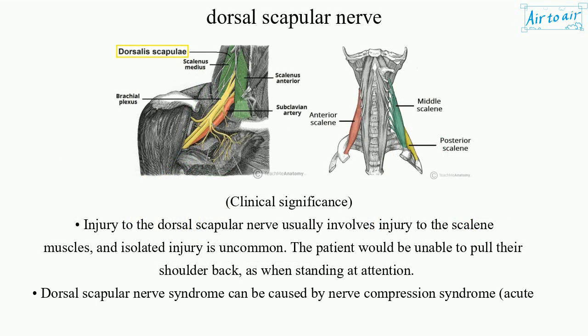Clinical Significance: Injury to the Dorsal Scapular Nerve usually involves injury to the scalene muscles, and isolated injury is uncommon. The patient would be unable to pull their shoulder back, as when standing at attention. Dorsal Scapular Nerve Syndrome can be caused by nerve compression, either acute or chronic.